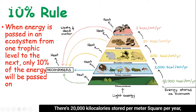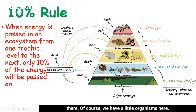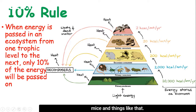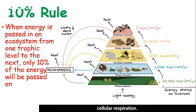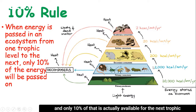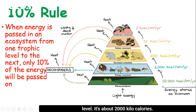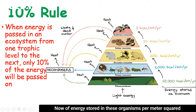Let's say in all this grassland, there are 20,000 kilocalories stored per meter squared per year — lots of energy available there. We have little organisms feeding on the primary producers, like insects and mice. However, due to cellular respiration and other losses, about 90% of that energy is lost, and only 10% is actually available for the next trophic level. So about 2,000 kilocalories of energy stored in these organisms per meter squared per year.